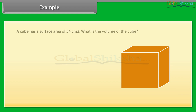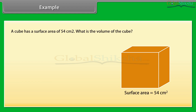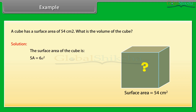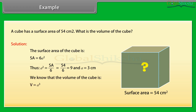Let us now solve an example to find the volume of a cube. A cube has a surface area of 54 cm². What is the volume of the cube? The surface area of the cube is SA equals 6A square. Thus, A square equals SA upon 6, which equals 54 upon 6, which equals 9, and A equals 3 cm. We know that the volume of the cube is V equals A cube. Therefore, V equals 3 cube, or V equals 27 cm cube.